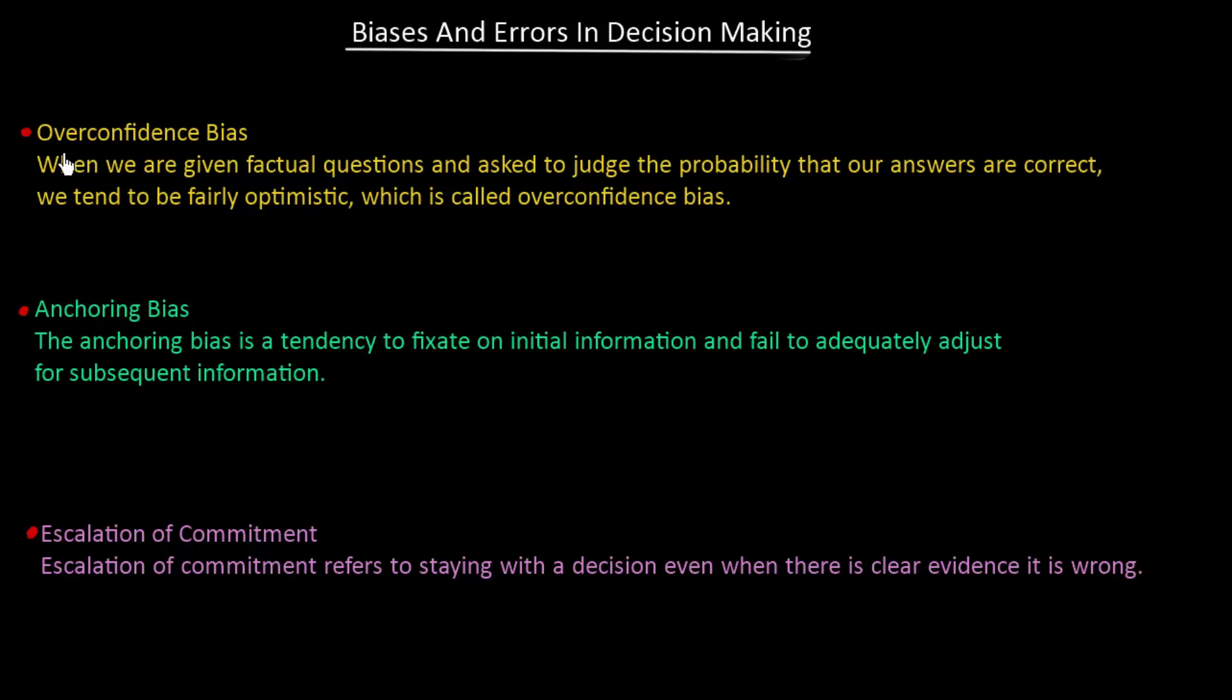First, the overconfidence bias. When we are given factual questions and asked to judge the probability that our answers are correct, we tend to be fairly optimistic, which is called overconfidence bias.